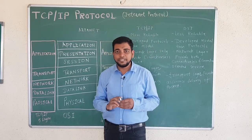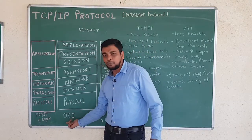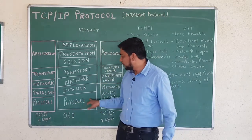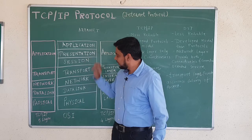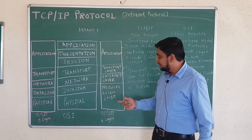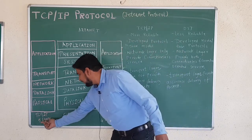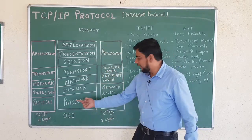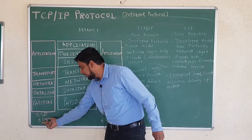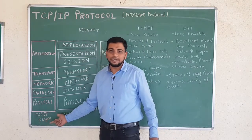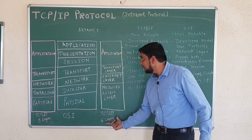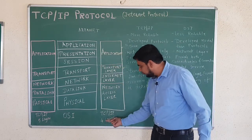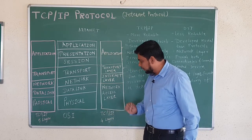In the last lecture we have seen what is OSI reference model — open system interconnection model. We have seen that there are 7 layers in OSI model. Whereas for the TCP/IP model, there can be 5 layers or 4 layers. If you refer Forouzan you will find 5 layers; if you refer Tanenbaum you will find 4 layers. But mostly 4 layers are used in TCP/IP model.